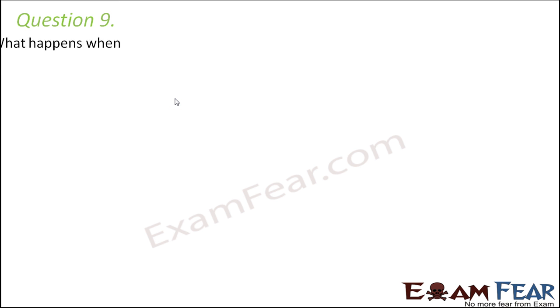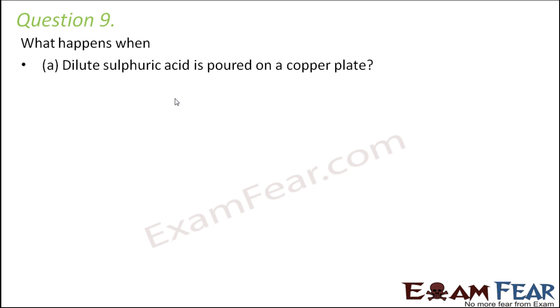Question number 9: What happens when dilute sulphuric acid is poured on a copper plate? Copper has to react with dilute sulphuric acid. Sulphuric acid is H2SO4. Now in this case, what will happen?